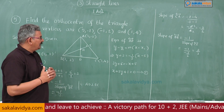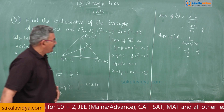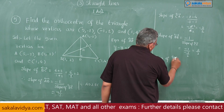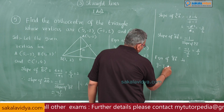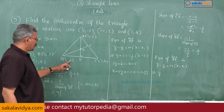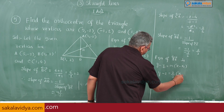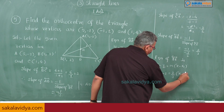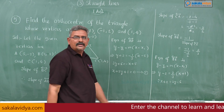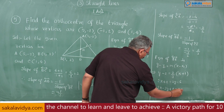Equation of altitude BE: it is a line passing through (-1, 2) with slope 2/3. Using y - y1 = m(x - x1): y - 2 = 2/3 × (x + 1). Cross-multiplying: 3y - 6 = 2x + 2, giving 2x - 3y + 8 = 0. This is equation 2.